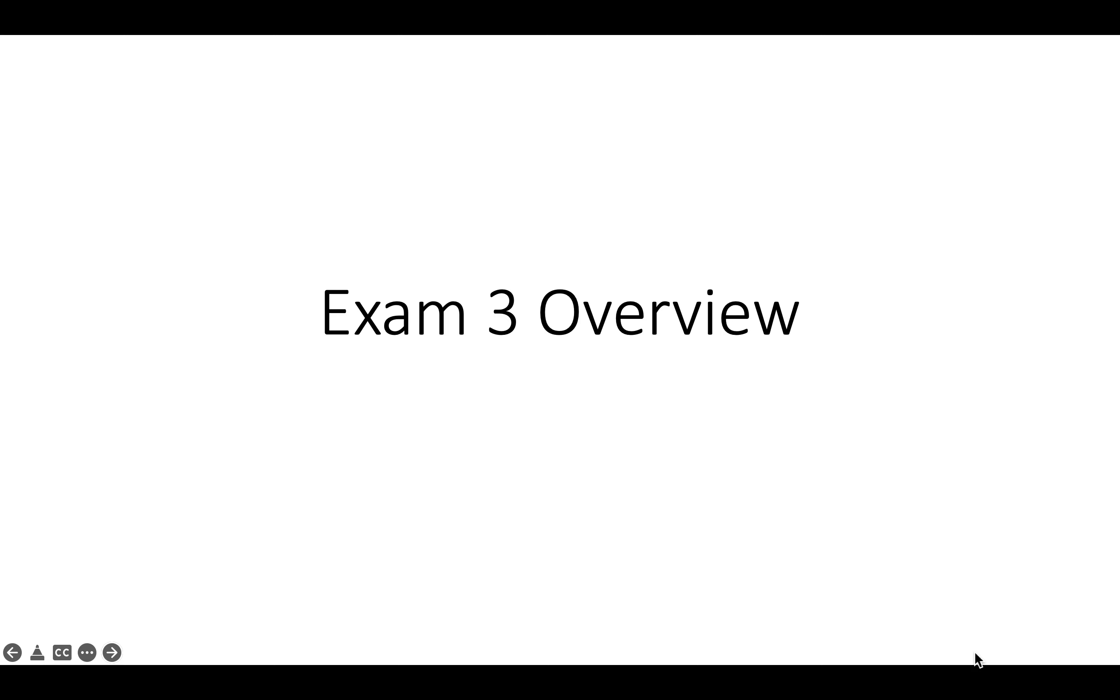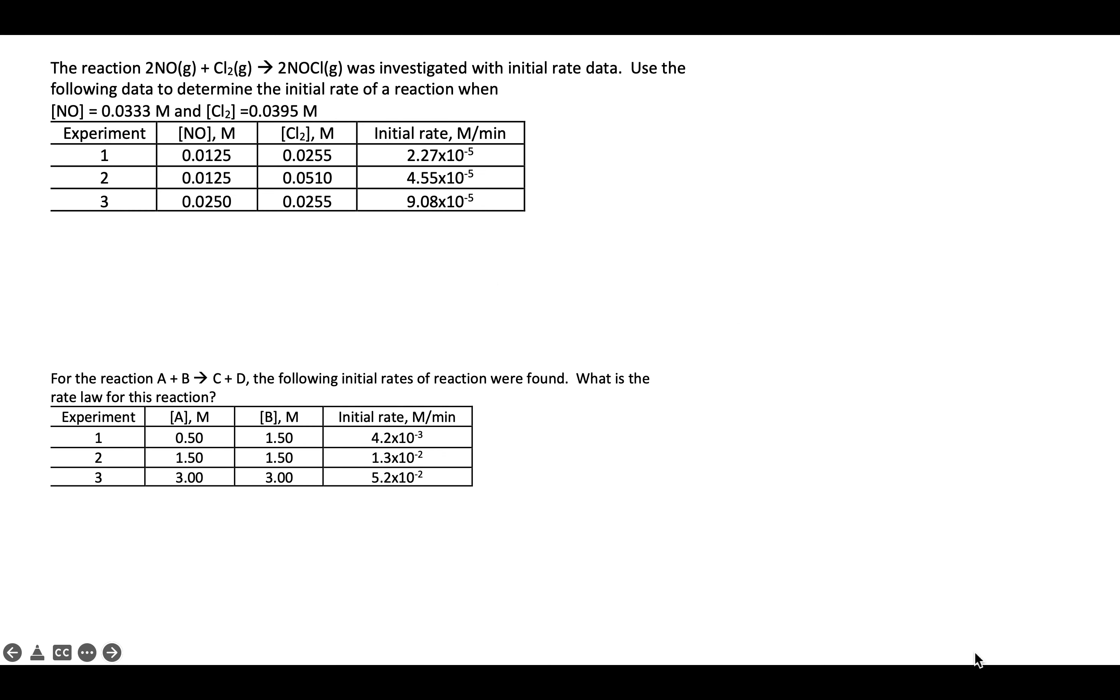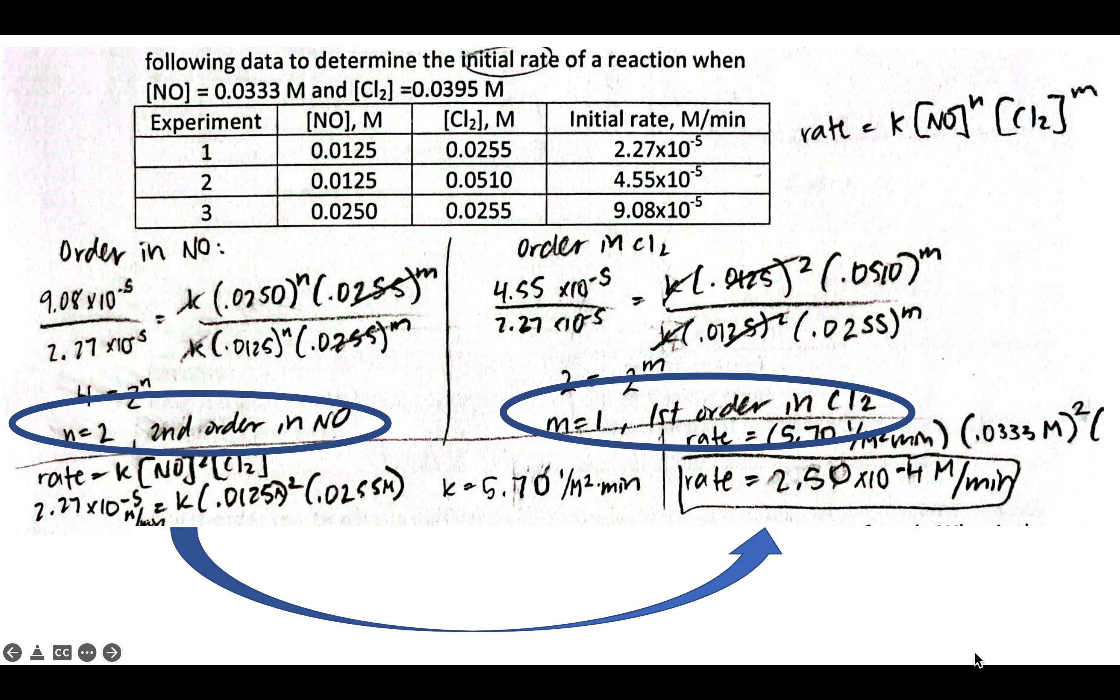Overview of the chapter of the third exam. So it begins with some initial rate data that's being used to calculate the corresponding rate law expressions or looking at features like the rate constants. For the first one, we end up with orders of two and one. If we then take those and use any of the experiments, we can solve for the rate constant. And we want to make sure that there's also the correct units shown for that.